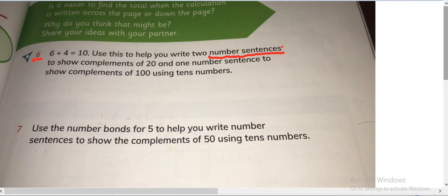Number sentences are anything or any expression that is written with a sign and it has equals to at the end. Like written with any sign: plus, minus, multiplication or division, and it must have an equals to sign with it.